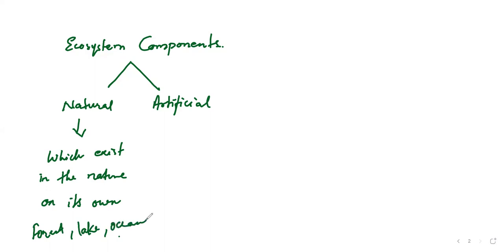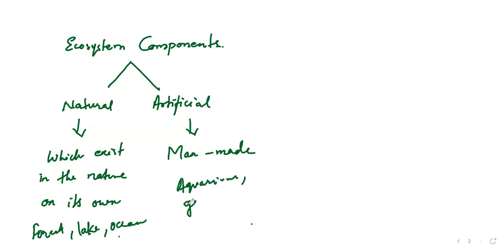Whereas artificial means man-made. For example, we can say aquariums, gardens, parks, fields, and crop fields. These all come under the artificial ecosystem.